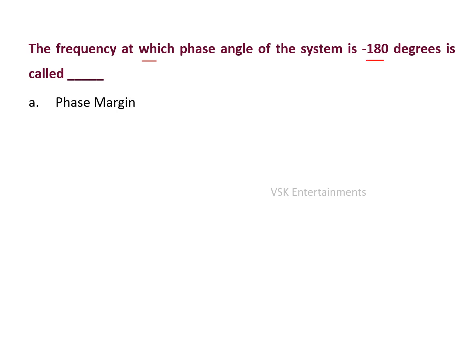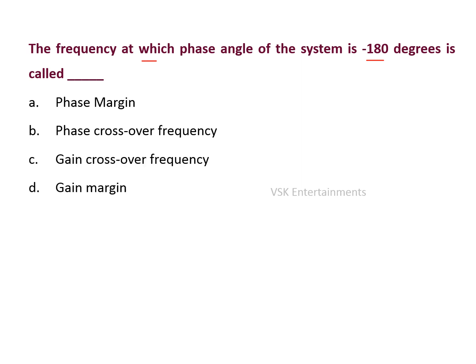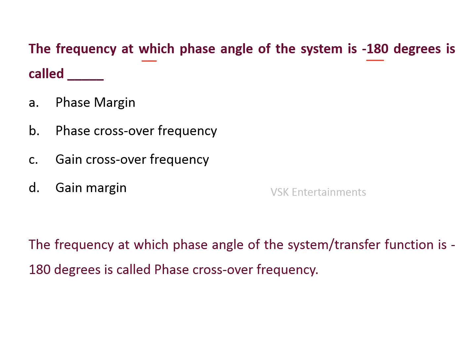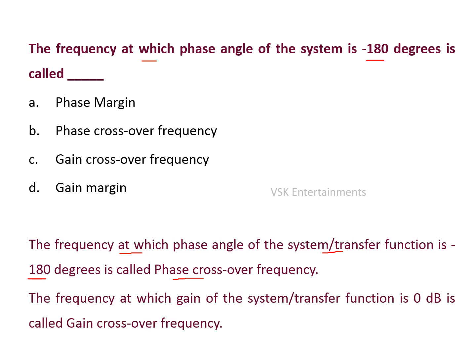Next question: the frequency at which the phase angle of the system is minus 180 degrees is called dash. Options are: phase margin, phase crossover frequency, gain crossover frequency, and gain margin. The frequency at which the phase angle of the transfer function is minus 180 degrees is called the phase crossover frequency. The frequency at which the gain is 0 dB is called the gain crossover frequency. So option B, phase crossover frequency, is the right answer.